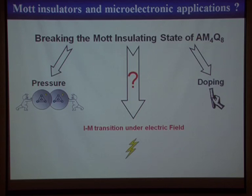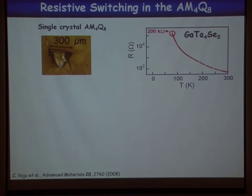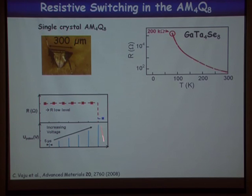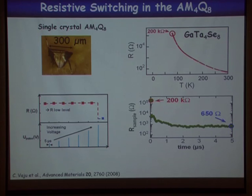We performed resistive switching experiments on a GaTa₄Se₈ crystal. The crystal shows nice insulating behavior, and at 77 K we applied a series of voltage pulses of increasing intensity. Above a certain level, there is a huge resistive switching — orders of magnitude drop in resistance — occurring in less than 100 nanoseconds to a low-resistance state of about 650 Ω. Critically, this is a non-volatile effect: after the pulse, the resistivity shows a new, no-longer-insulating behavior.